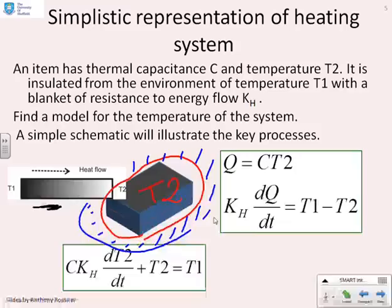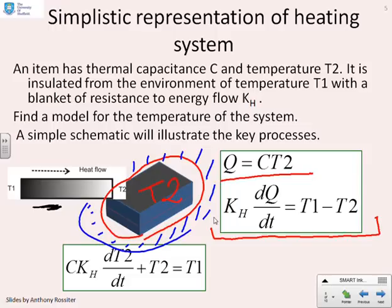What sort of equations are we going to need? The energy storage is the capacitance times the temperature, Q equals C times T2. The energy flow through this insulation is given by KH dQ/dt equals T1 minus T2. If I rearrange those two into a standard form, you get CKH times the rate of change of temperature 2 with time plus T2 equals T1. What do you notice? It's a simple first-order differential equation, exactly as we've seen in many of the other systems.